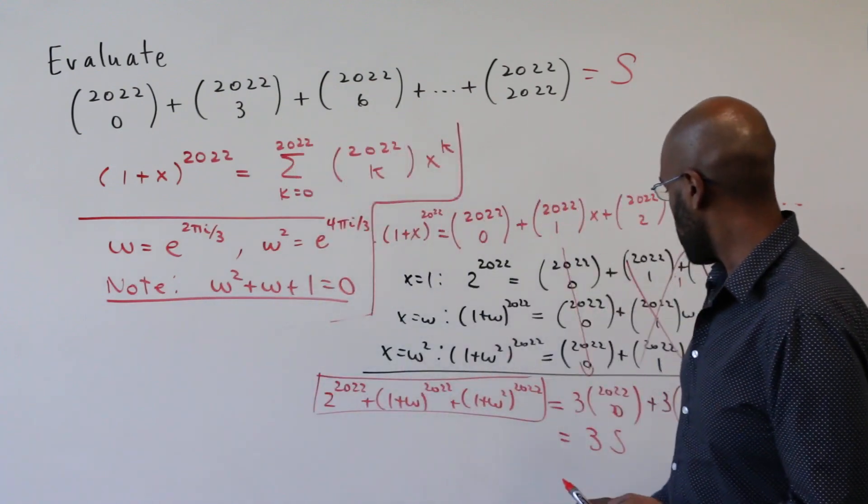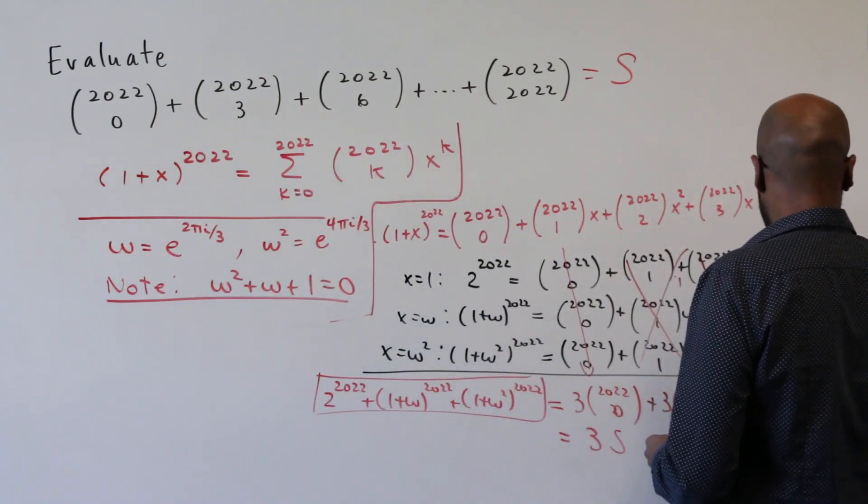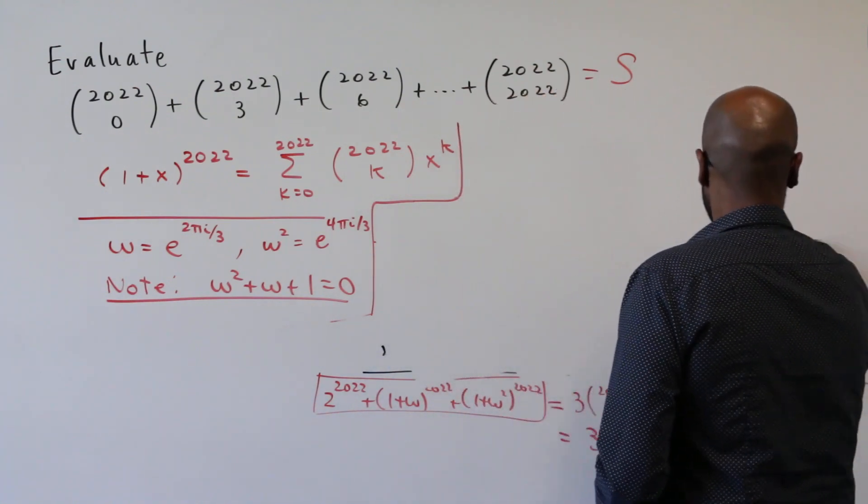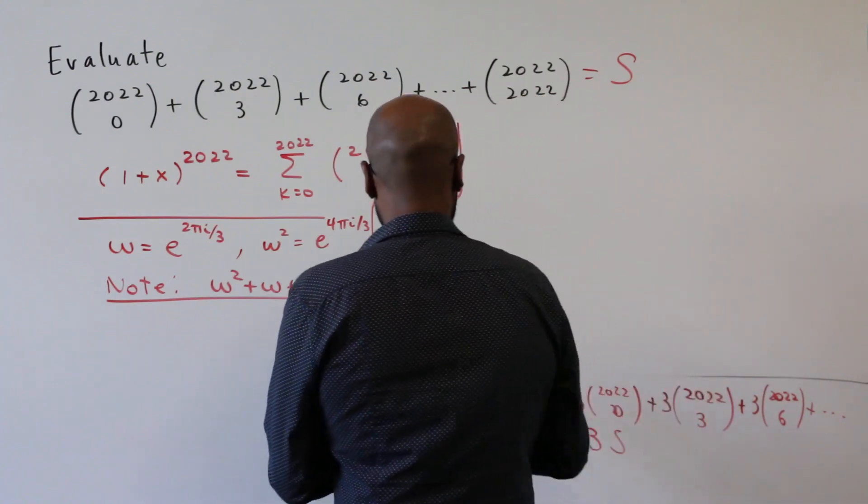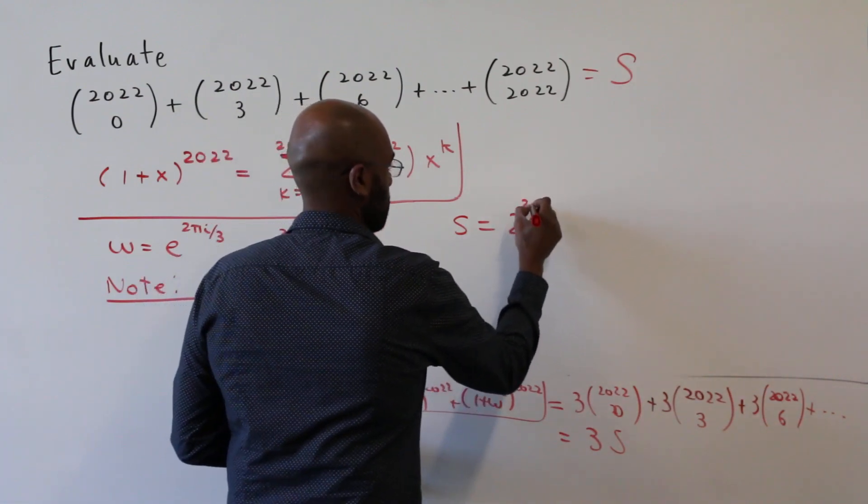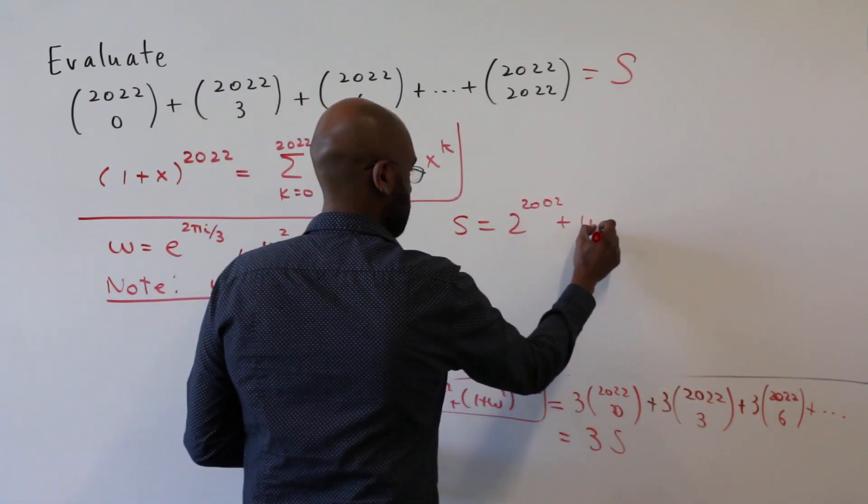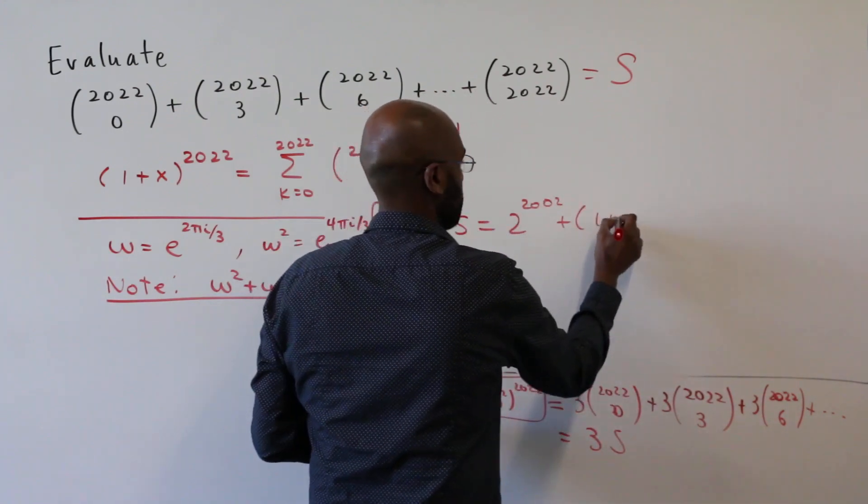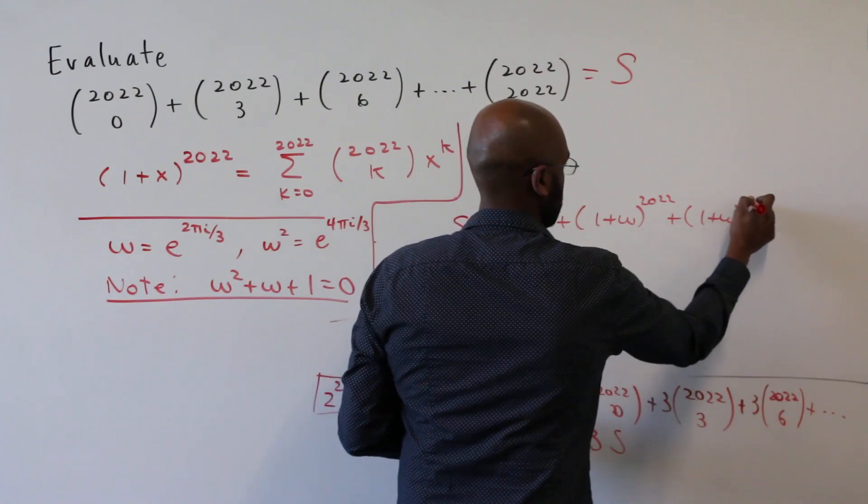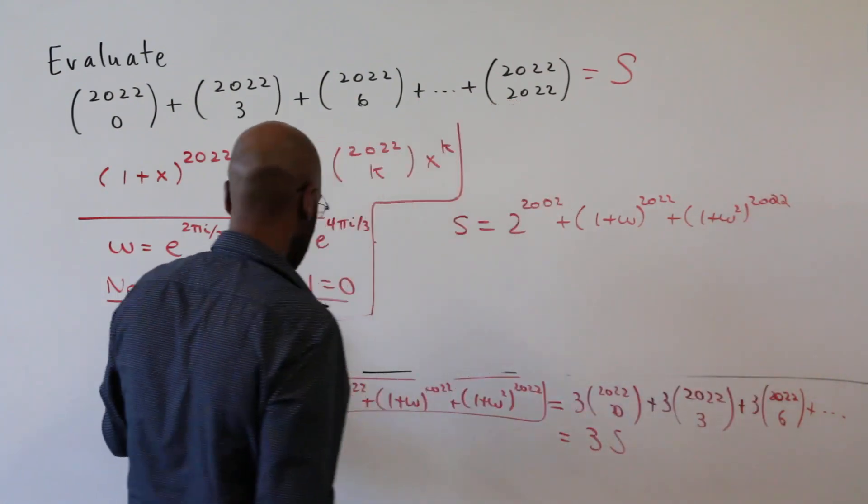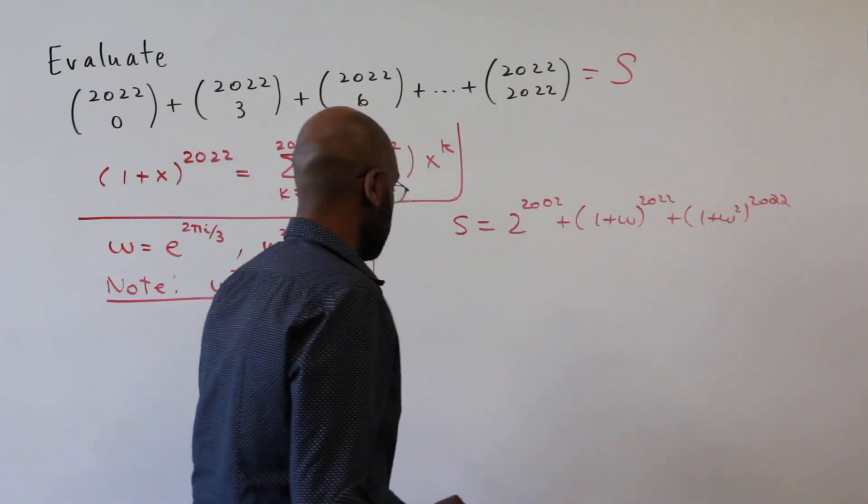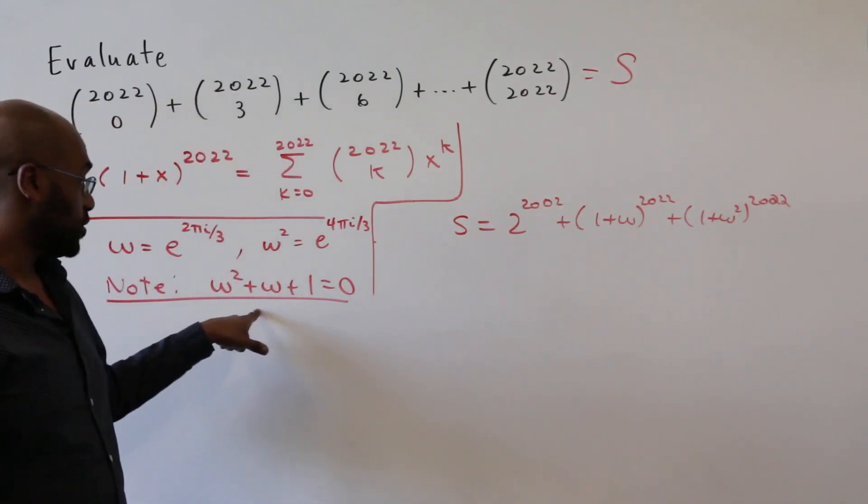Okay, so how are we going to simplify this even more? Let's write down this expression that we have now for S. So our sum S that we're interested in is this thing here plus one plus omega to the 2022 plus one plus omega squared to the 2022.